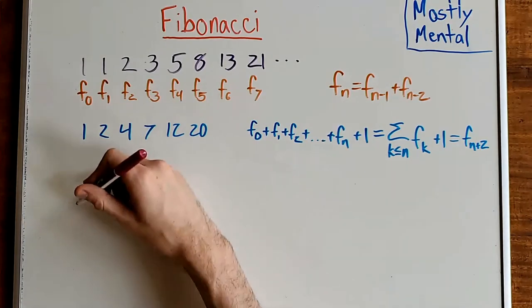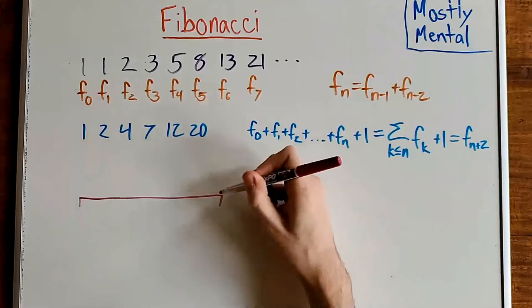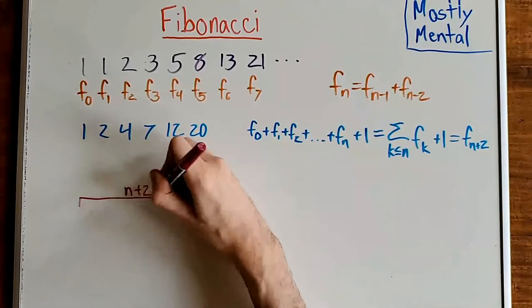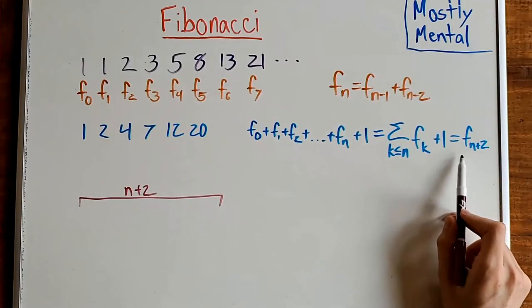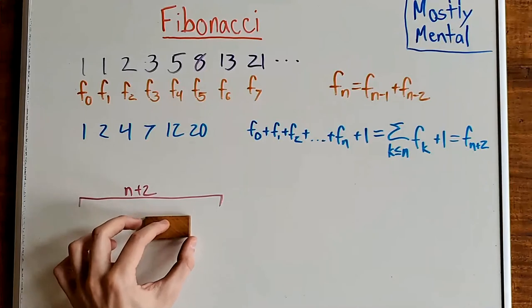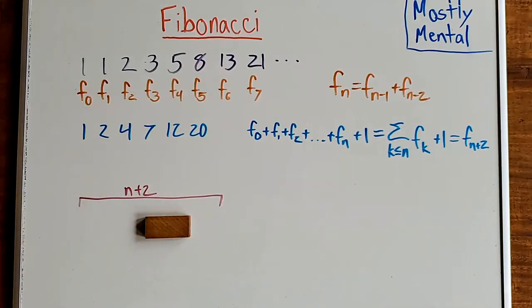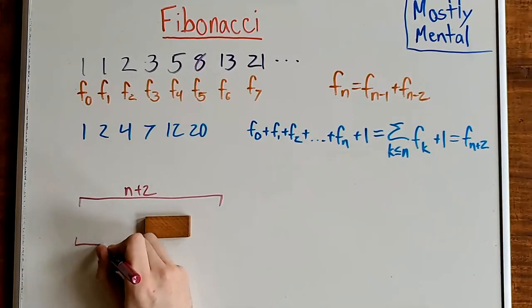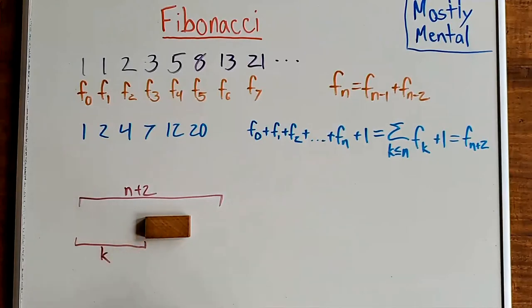In this case, what we want is the number of tilings for a row of length n plus 2. As we've seen, that's F sub n plus 2. Now, consider the position of the last domino in the tiling. If there are k spaces before it, that is, the domino is in positions k plus 1 and k plus 2,